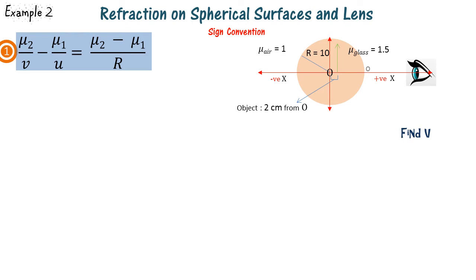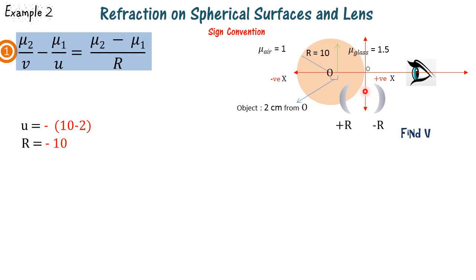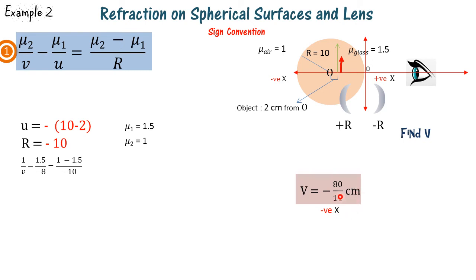Here we are given a glass sphere with the object placed 2 centimeters from the center, and we must find the position of the image. The y-axis is drawn on the boundary of the spherical surface and the medium. The object is on the negative x-axis and OO is the radius, so u is minus 8. The surface bulges towards the eye, so R is minus 10. The object is in glass, so mu 1 is 1.5 and mu 2 is 1. The negative result signifies the image is on the same side as the object.